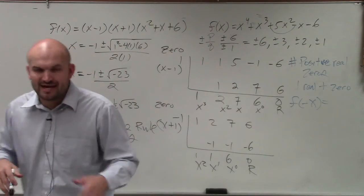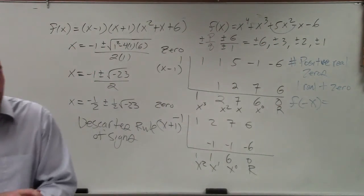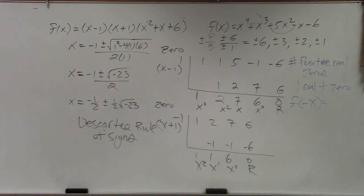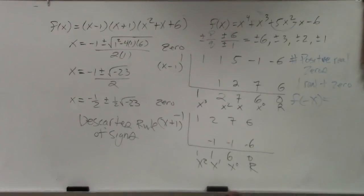The number of negative real zeros equals the number of sign changes of f of negative x. I'll go back over that. I do have homework and videos on it, so please plan to review.